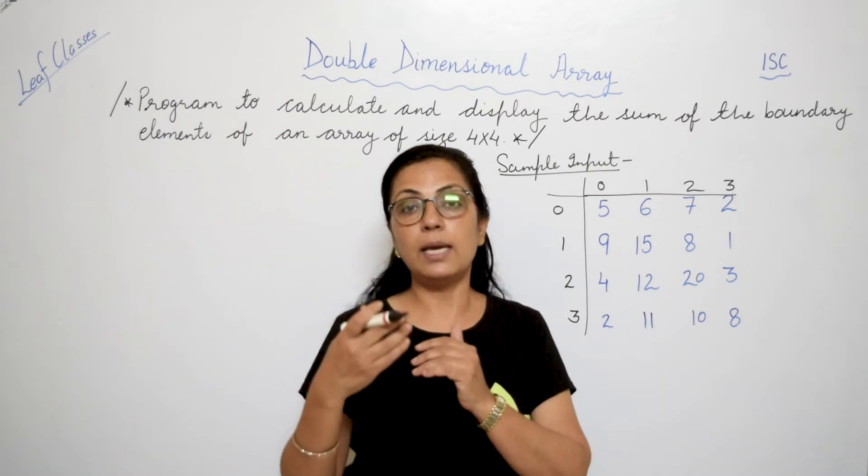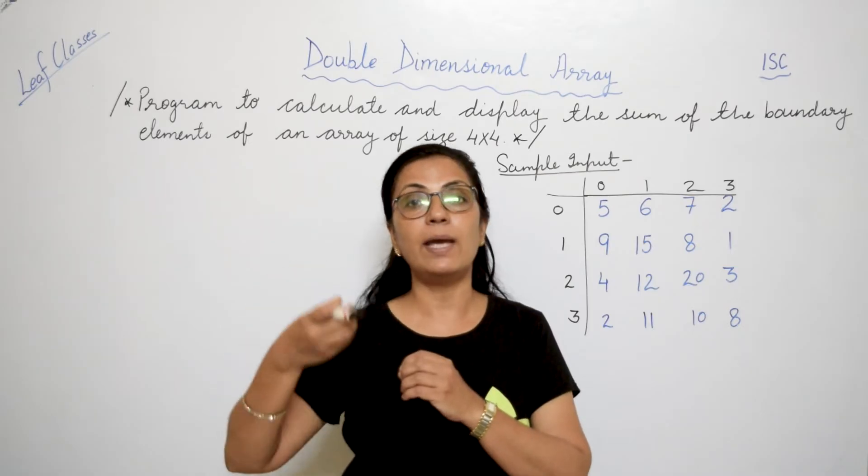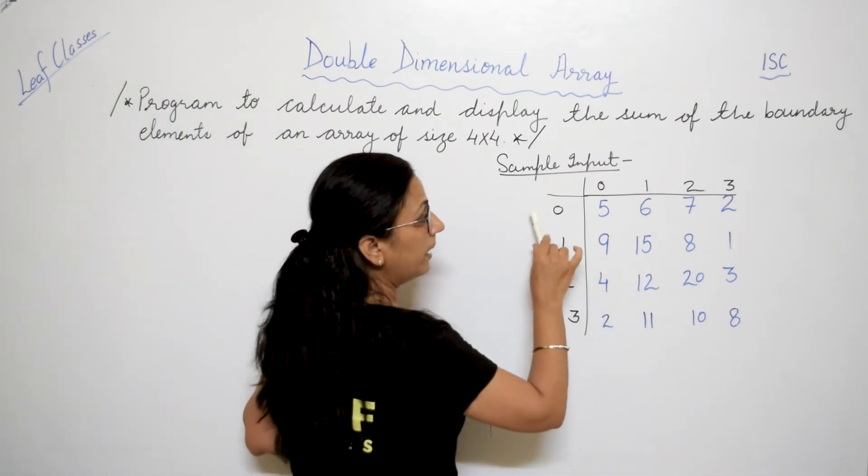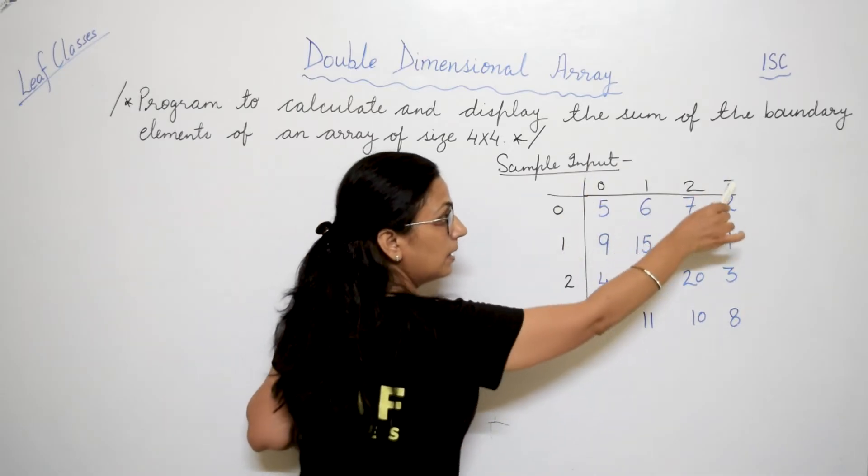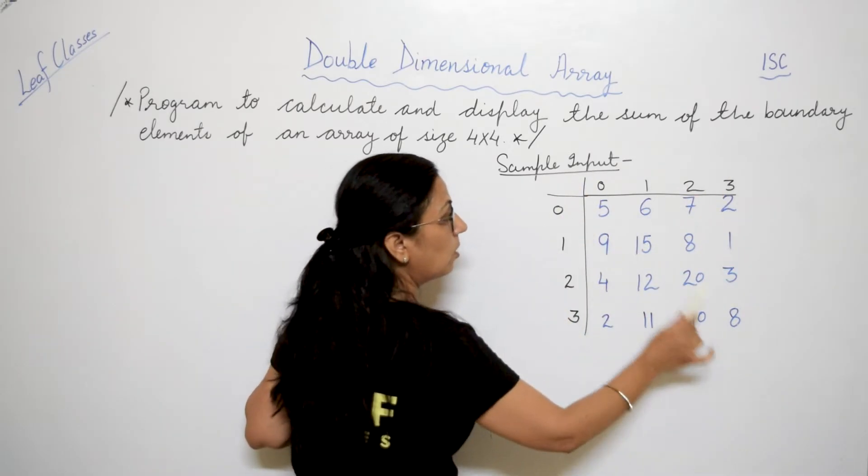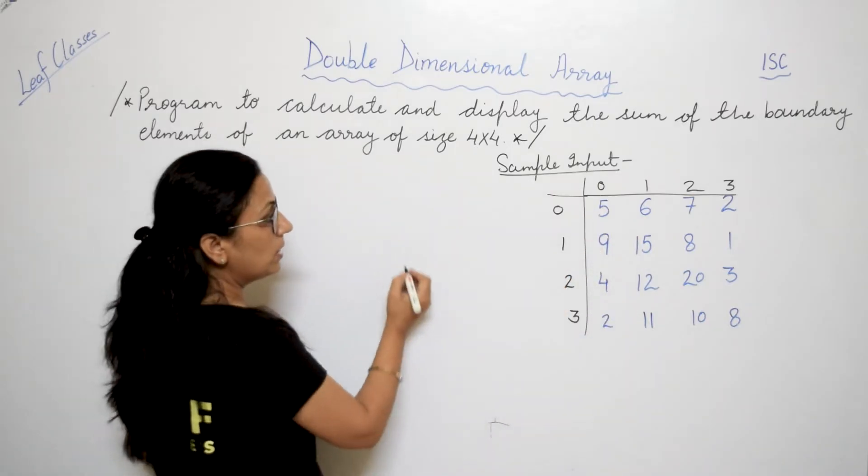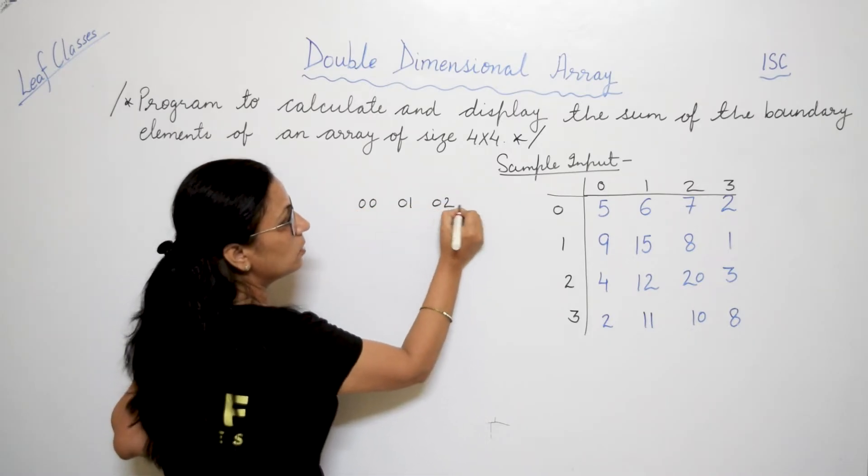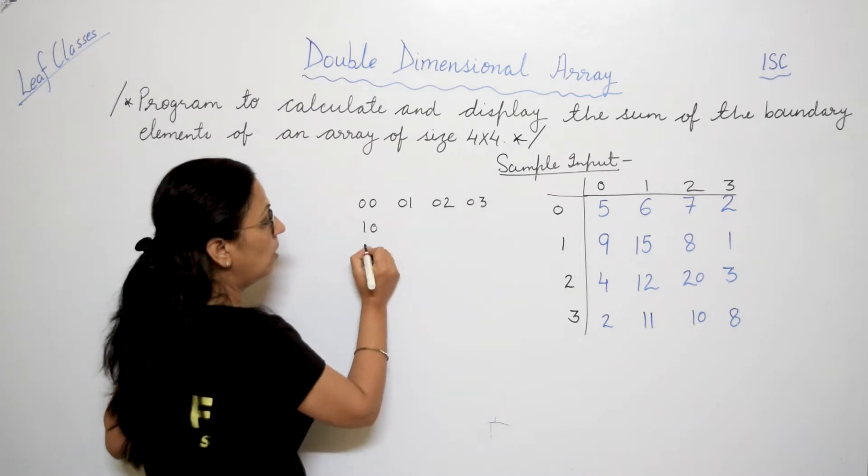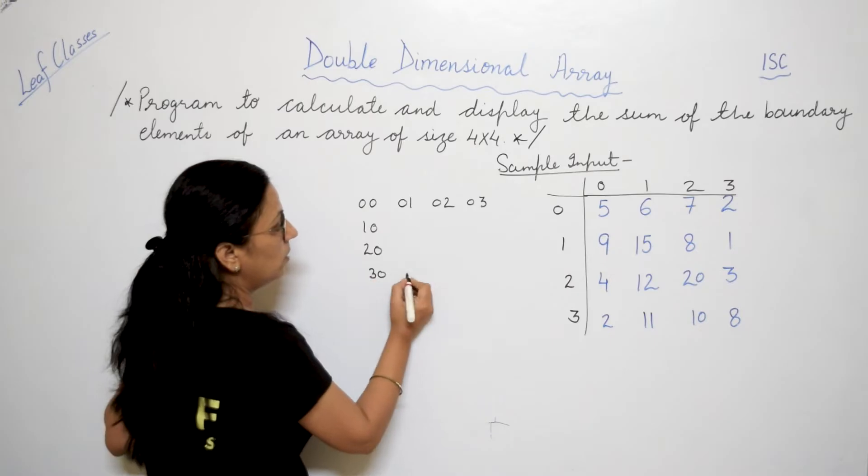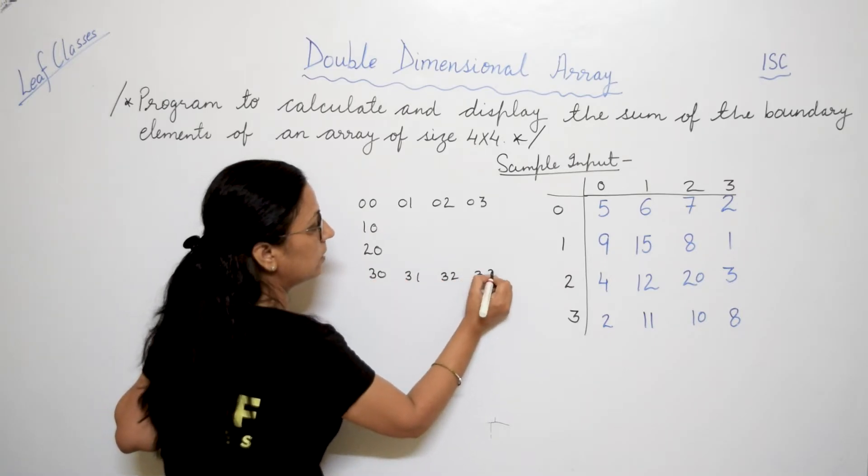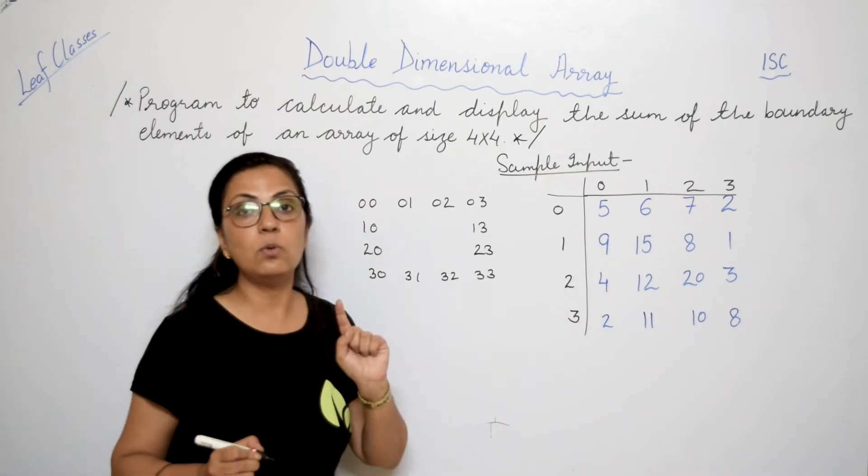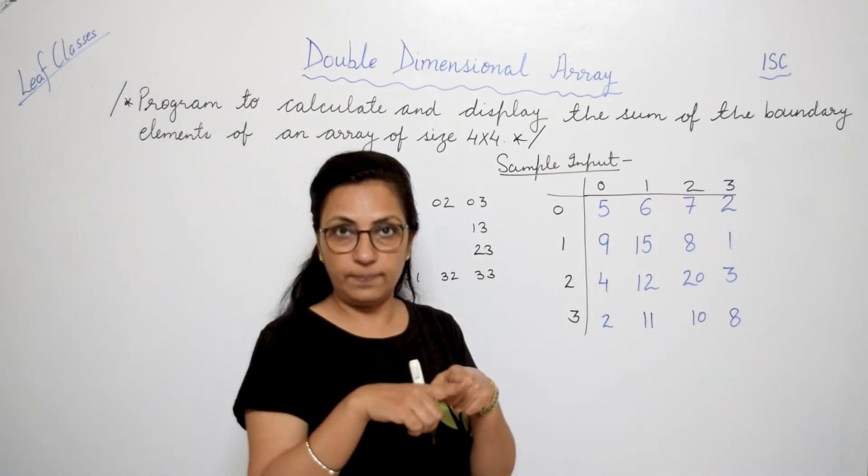So if you notice here, which elements you want? You want the elements of 0th row and last column, last row and 0th column. These elements are 00, 01, 02, 03, 0. Then 31, 32, 33. Then you have 13 and 23 in subscripts. These are the elements we have to sum. This is our boundary.